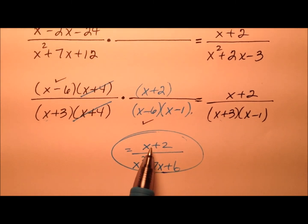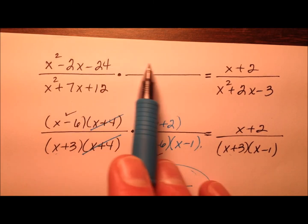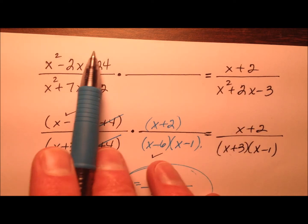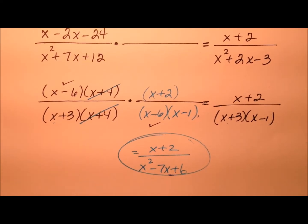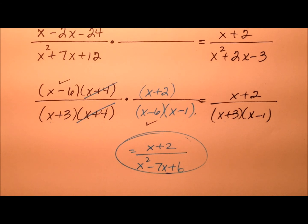What rational expression belongs here, so when I multiply these two rational expressions, I get this. So it looks like x plus 2 over x squared minus 7x plus 6.